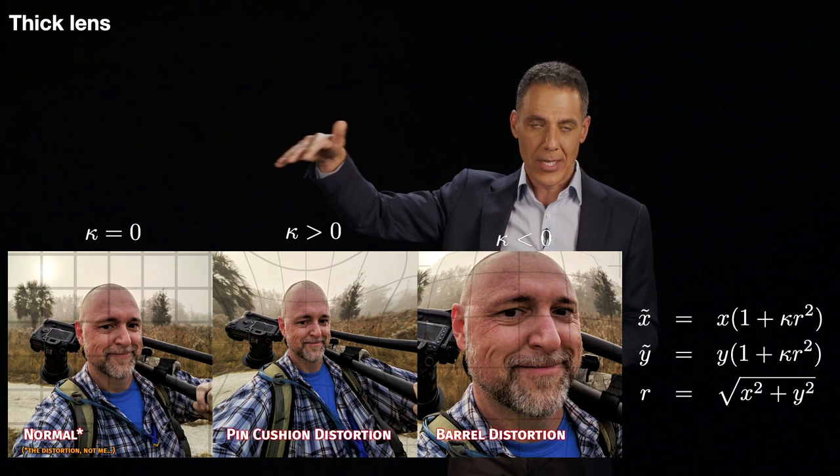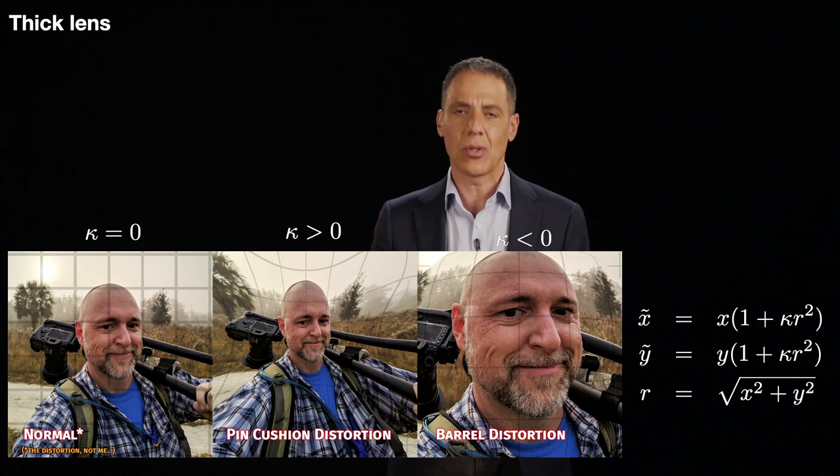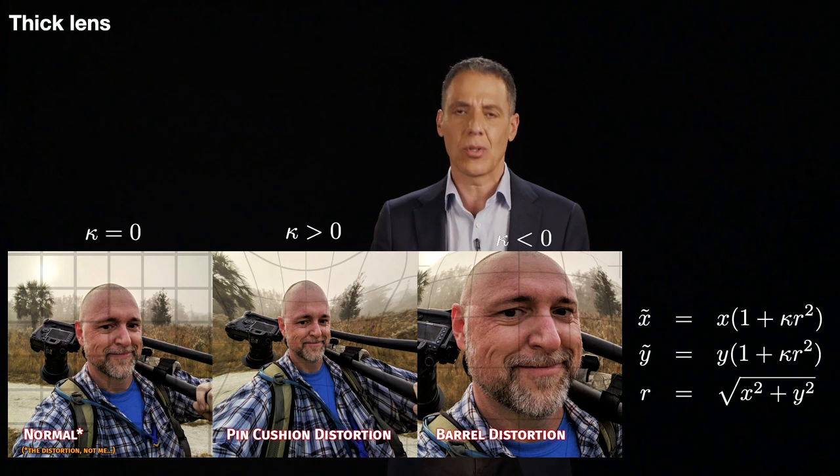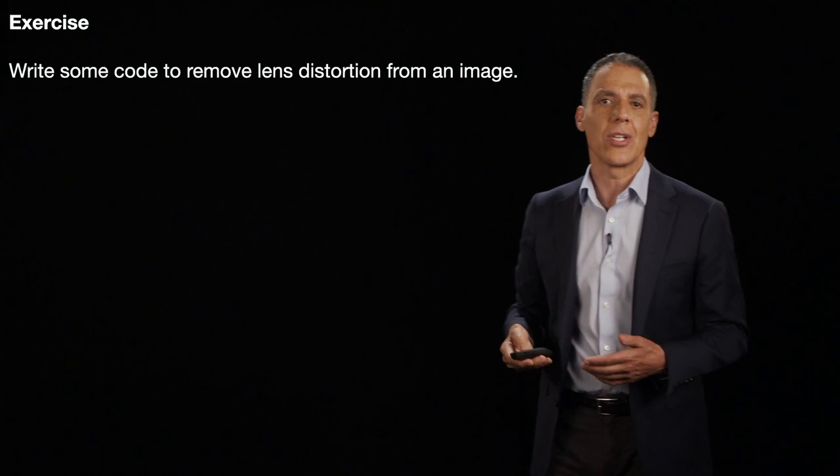The basic imaging model that we assumed earlier on - perspective projection - assumes that straight lines in the world image to straight lines in the image. And when you have lens distortion, that is not true. And the entire perspective projection model breaks down, and then everything that follows that also breaks down. So if you have lens distortion, not that common in things like mobile devices because they have pretty simple optics, but in more sophisticated imaging devices, you have to deal with lens distortion. And in fact, let's do an exercise to do that. It's a good exercise in manipulating images.